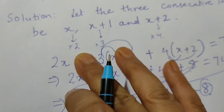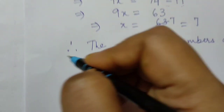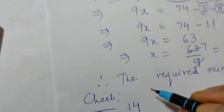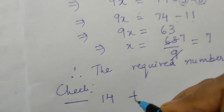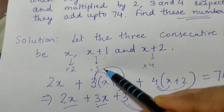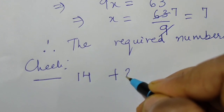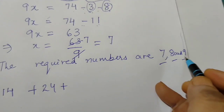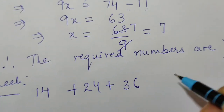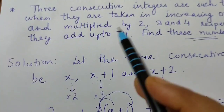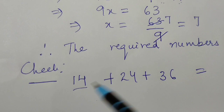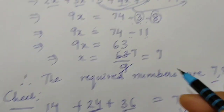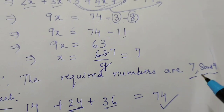We can check the answer: multiply 7 by 2 to get 14; multiply 8 by 3 to get 24; multiply 9 by 4 to get 36. Adding: 14 plus 24 is 38, and 38 plus 36 is 74. That matches the requirement of the question, so the numbers 7, 8 and 9 are correct.